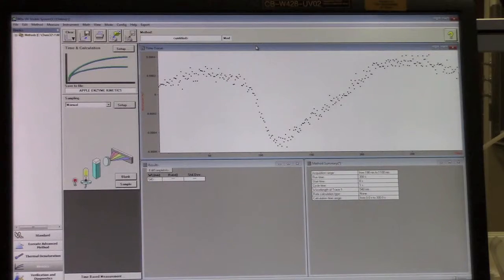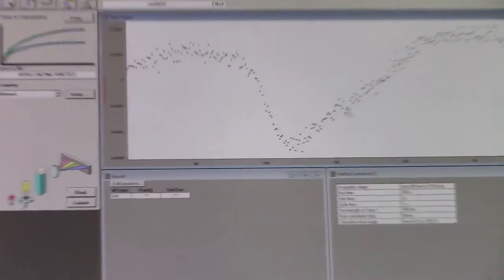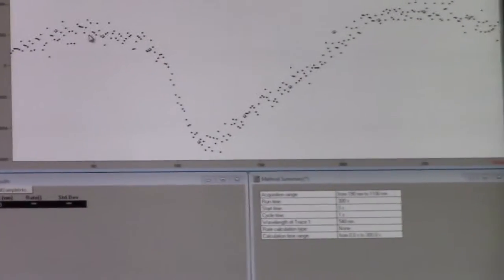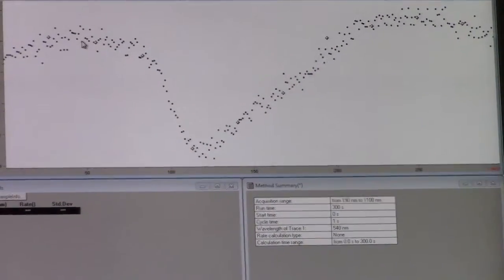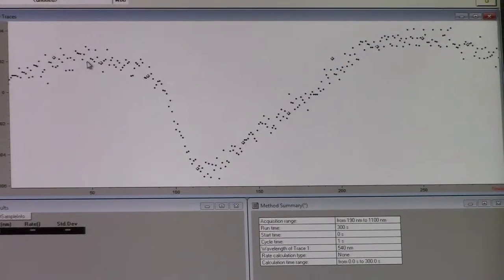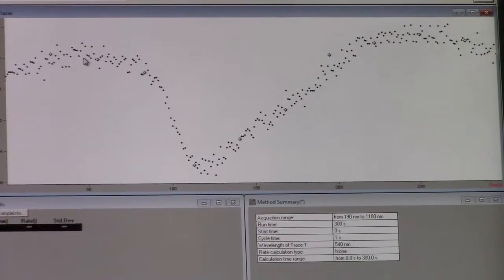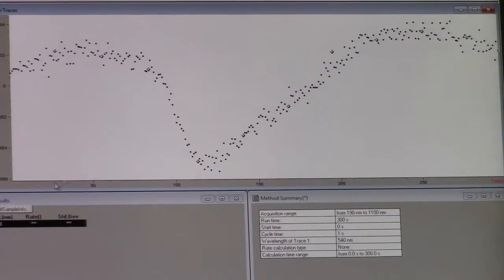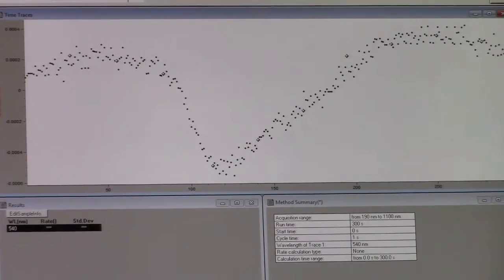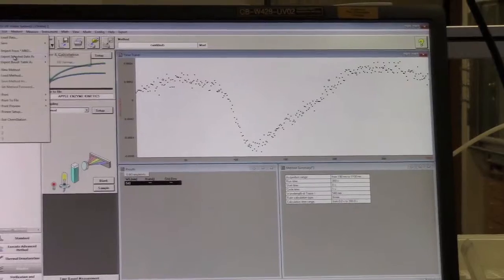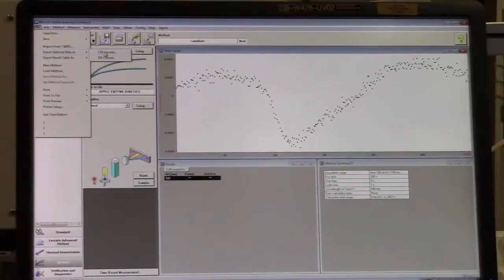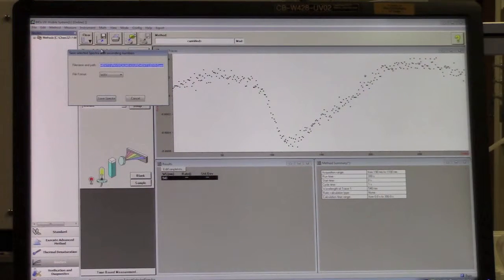Once the measurement is complete, you'll see a detailed view of the time trace, the absorbance versus time in seconds. You can export this data as a CSV file by clicking on the data, going to File, Export Selected Data As, and selecting CSV format.